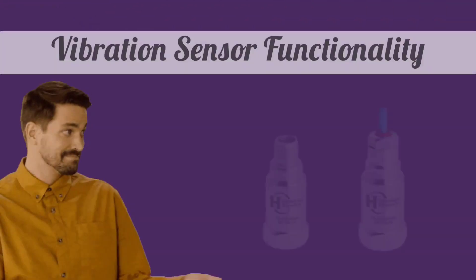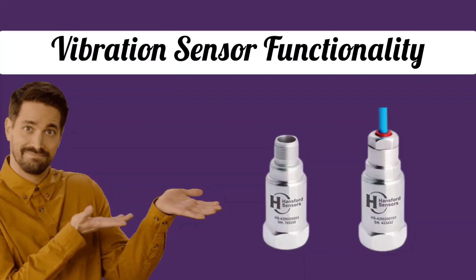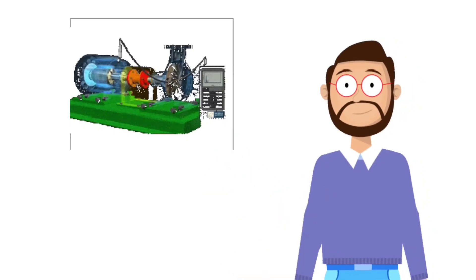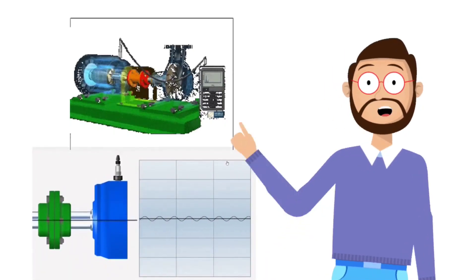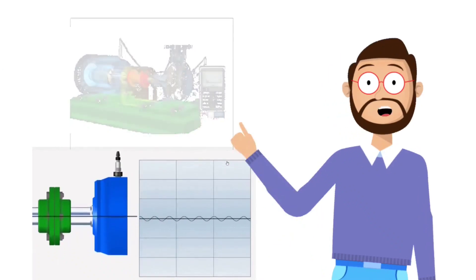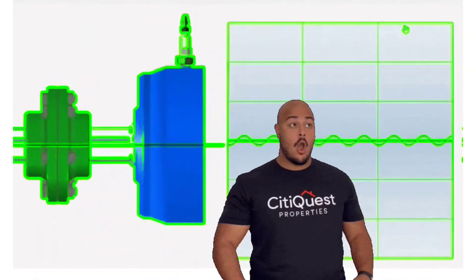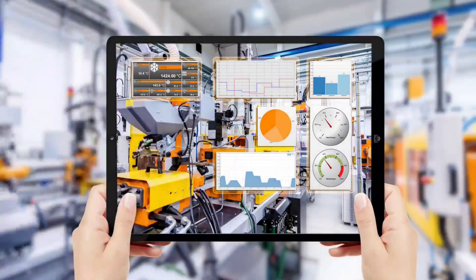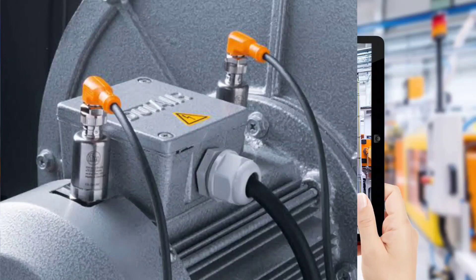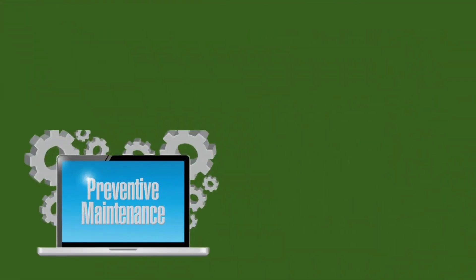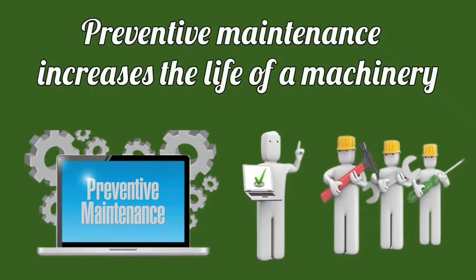Let's start with the functionality of vibration sensors. Vibration sensors are instruments which measure and also analyze the vibrations of machinery and equipment. As you are aware, too much vibration can damage any machinery. That's why sensors are essential in industries for preventive maintenance of machinery. Preventive maintenance increases the life of any machinery.